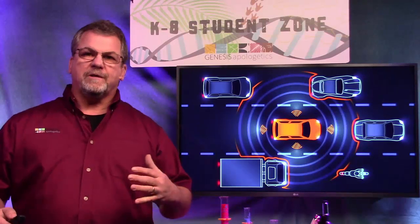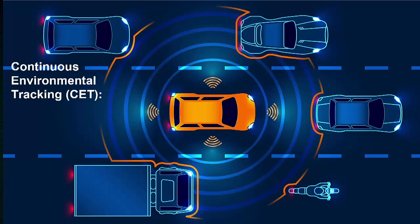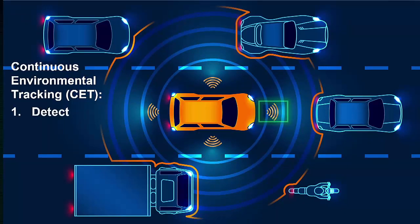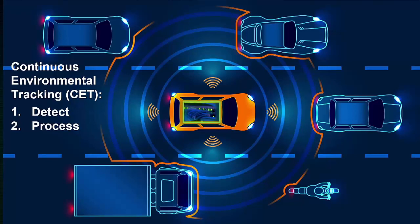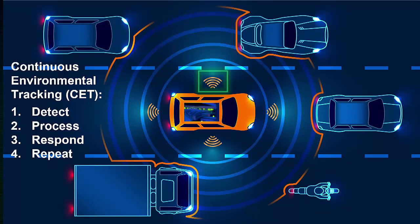A few years ago, Google invented a car capable of driving itself using continuous environmental tracking. They equipped the car with all kinds of sensors — it knows how fast it's going, the objects around it, and what the weather conditions are. For example, if the Google car detects it's too close to the car in front, the programming says 'I know what to do' and automatically applies the brakes, maintaining a safe distance. The car keeps detecting all conditions around it and makes changes necessary to arrive safely at its destination.